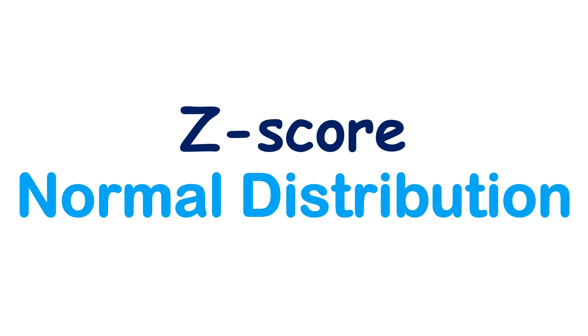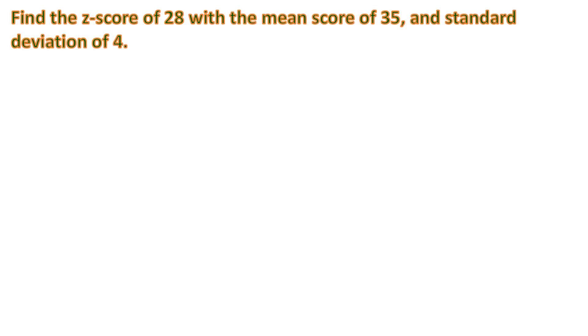In this video, I will be teaching you how to solve the z-score of a normal distribution. So let's say for example, we'll test to do this: find the z-score of 28 with a mean score of 35 and standard deviation of 4.